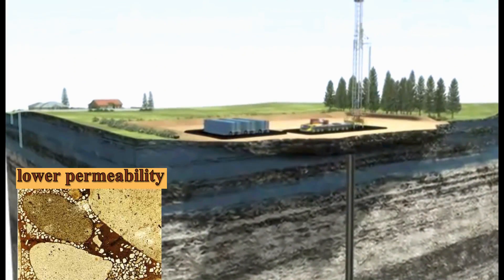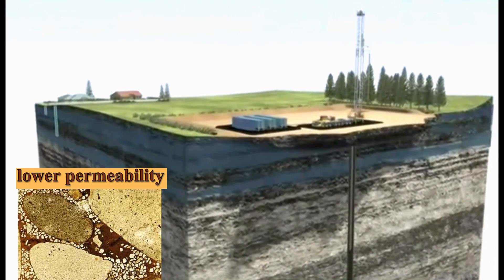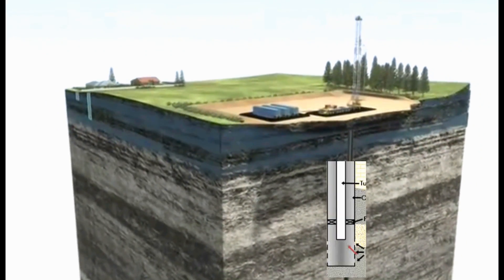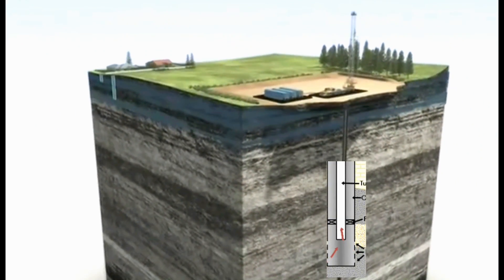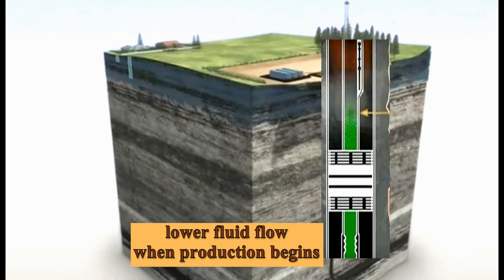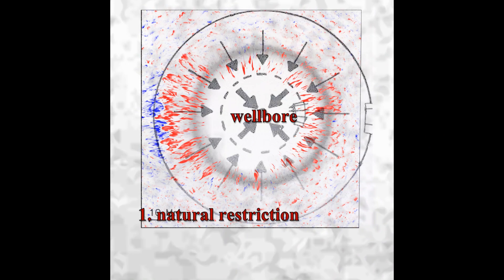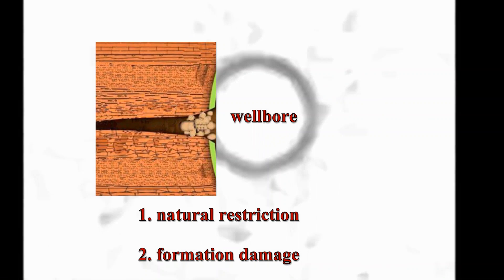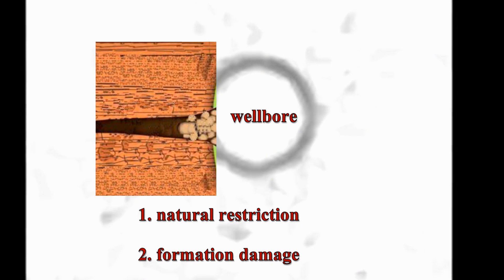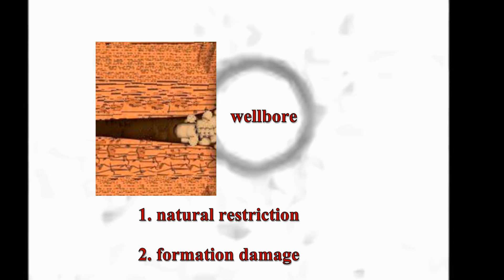More evident in lower permeability formations than in higher ones, this reduction in the fluid volume can result in lower fluid flow when production begins. In addition to this natural restriction just described, there may also be formation damage which may also prevent the fluid from flowing freely. Caused when the formation rock comes into contact with the drilling mud, formation damage can appear as one of two types.